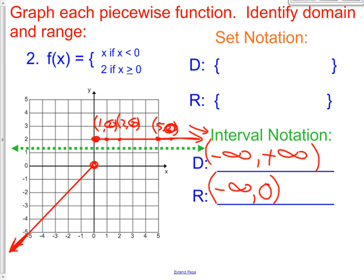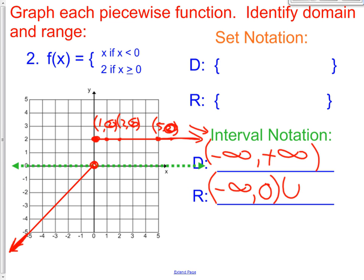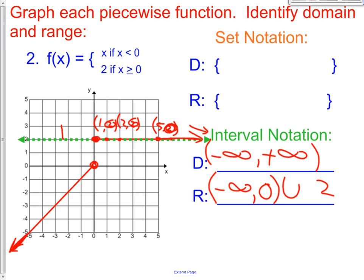So if I have more y-values where I need to pick up my pencil, I have a union. Negative infinity up to 0 — union — because I pick up my pencil and it starts right there again. Now it starts at 2. How high does it go? It stays at 2 — it doesn't go up to 3. It equals 2; it's not less than or greater than 2, it equals 2. So I'm going to have a bracket on the left and a bracket on the right, because that's the only number there is.